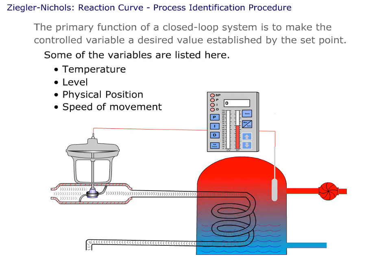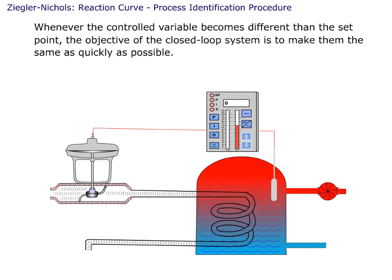Some of the variables are listed here. They include temperature, level, physical position, and the speed of movement. Whenever the controlled variable becomes different than the set point, the objective of the closed loop system is to make them the same as quickly as possible.